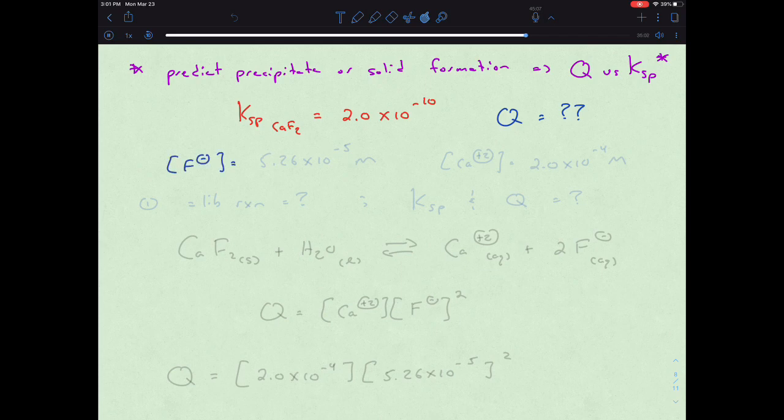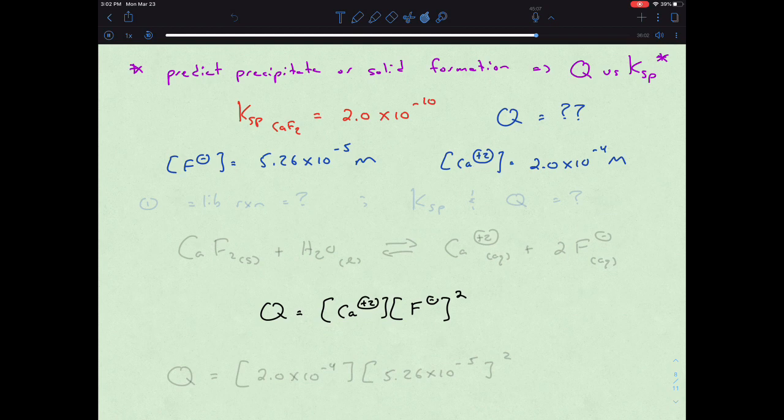We could say that our fluoride is equal to 5.26 times 10 to the negative 5th molar. The molecule is 1 to 1, so it has the same concentration as the molecule sodium fluoride does. And we also have that calcium concentration given to us as well as being 2.0 times 10 to the negative 4th molar. So we can apply those two to Q and then solve for the actual question of will there be precipitate or not. So Q would be equal to this, based off of our reaction for the calcium fluoride.